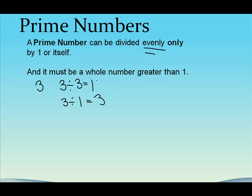Now this evenly part means that when I divide, I don't end up with a fraction or a decimal. Let's try another number. Let's try five. The only way to divide five evenly is by itself, which would give us one. Or by one, which is five.